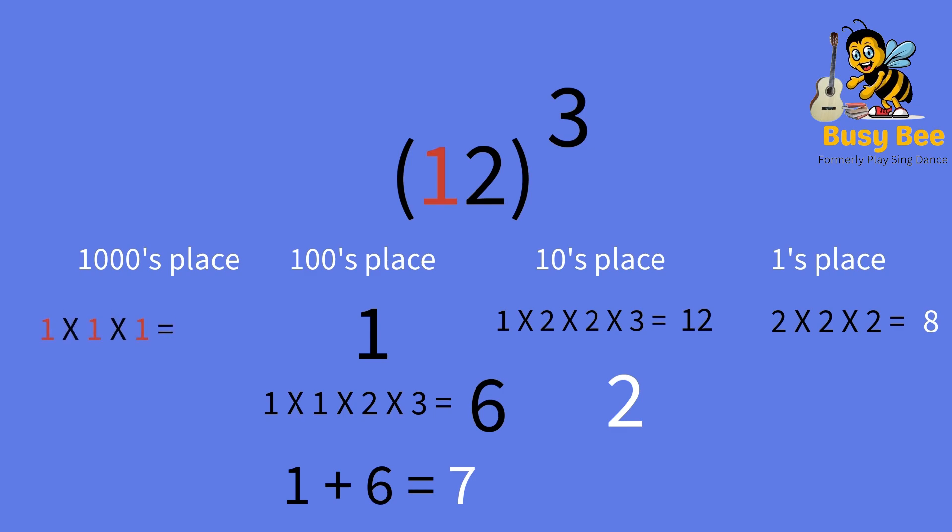Now, we take the tens place number, multiply it with the tens place number again, and then multiply it by the tens place number again. The thousands place answer is 1. The final answer is 1728.